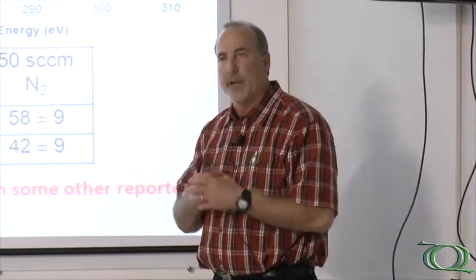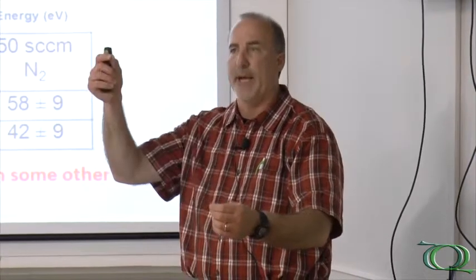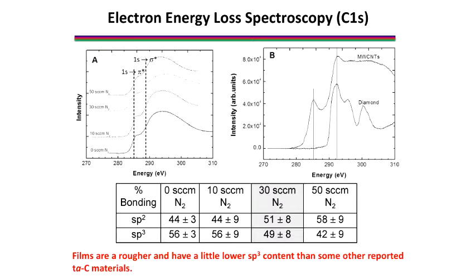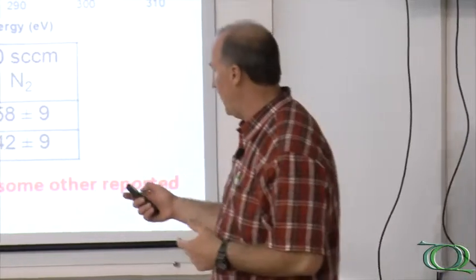Another technique that we use a lot is electron energy loss spectroscopy. It's done in the TEM. We can look at the electrons have some energy impact in the sample, they have some energy coming out and some of the energy is lost due to excitations in the material. We can study the energy loss in the carbon region, the carbon 1S region here. We can look at two features in this energy loss spectrum. There's an increase in the energy here at about 284 or 287.5 electron volts, and then we have another rise here at about 289.